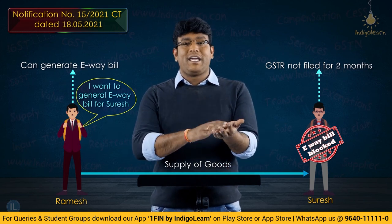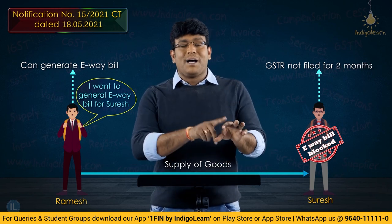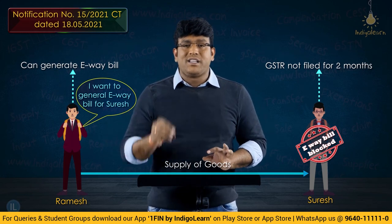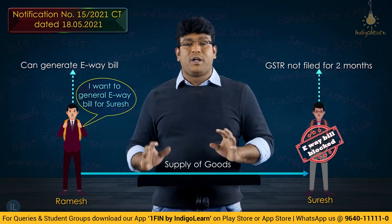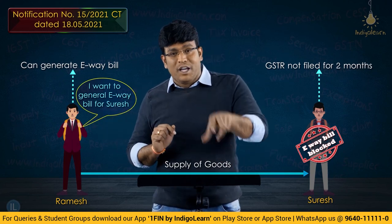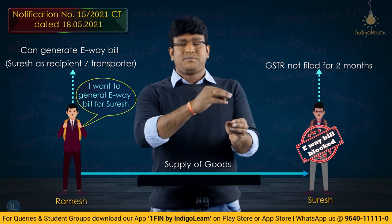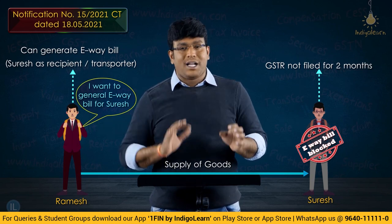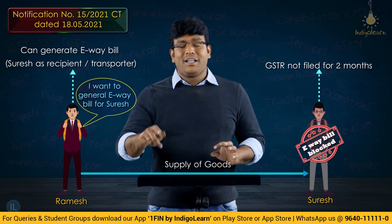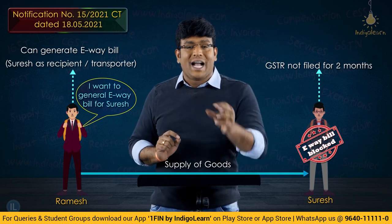Even though Suresh's facility for e-way bill is blocked since he failed to furnish return for the last two months, some other person can generate an e-way bill in his name. The person whose facility is blocked cannot do outward e-way bill, but there can definitely be an inward e-way bill. When Ramesh sends goods to Suresh, Ramesh can generate an e-way bill stating Suresh is the receiver.